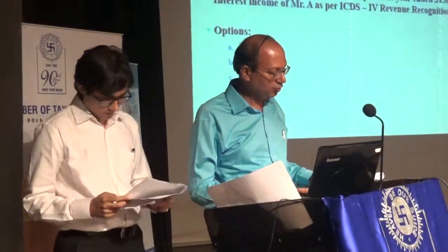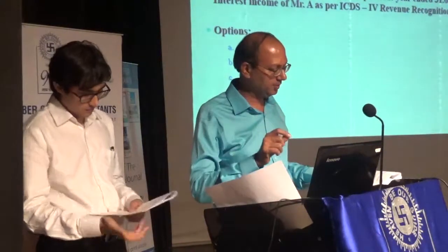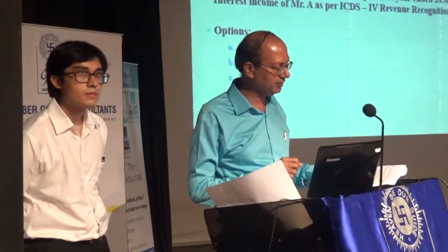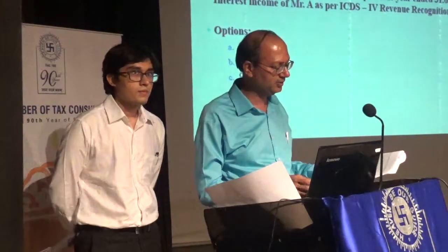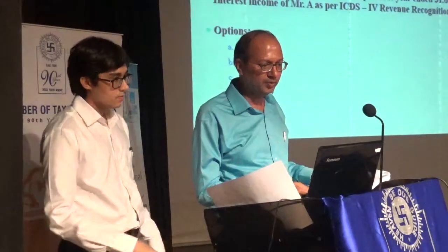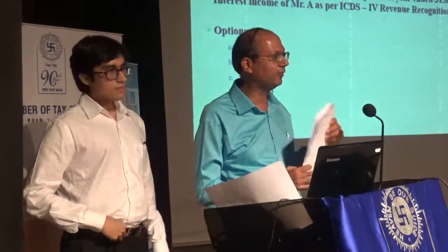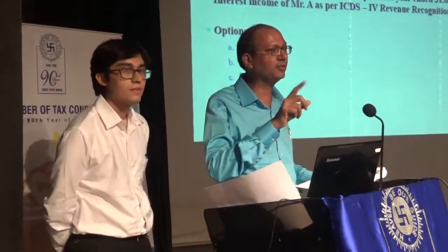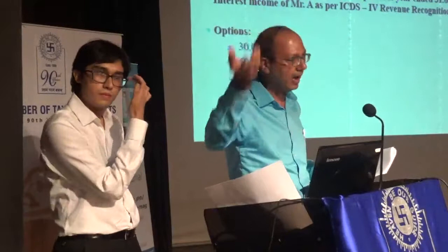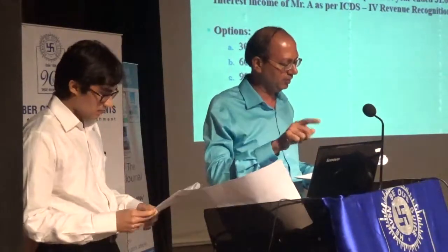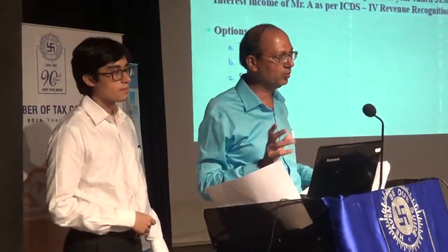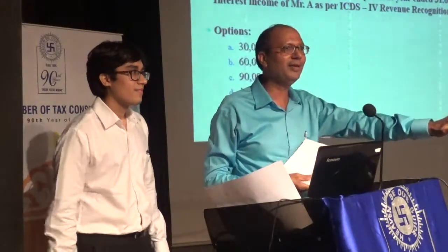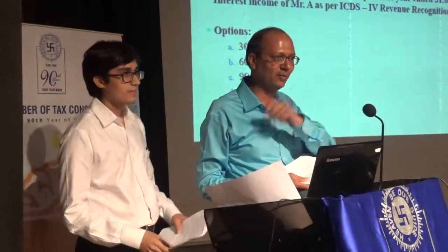Question nine: on July 1st, 2016, Mr. Rahas invested 10 lakhs in a bond carrying interest at 12%, with coupon dates of 30th June and 31st December. For the previous year ended 31st March 2017, the interest income as per ICDS 2 — revenue — is 90,000 rupees. The reason: the period of calculation is from 1st July to 31st March, not 1st July to 31st December, even though the due date for receiving falls after March. That is what ICDS provides.